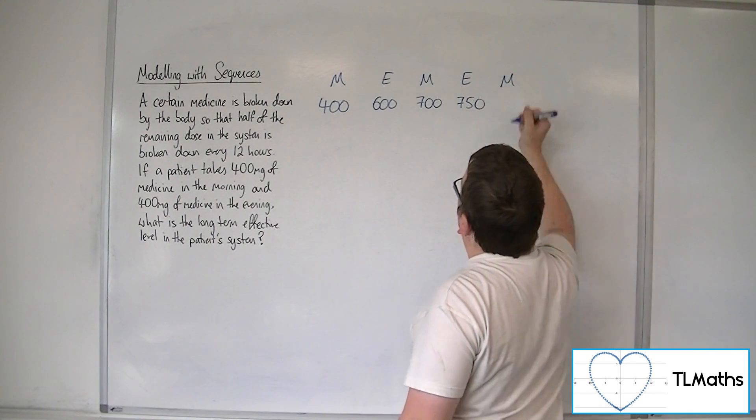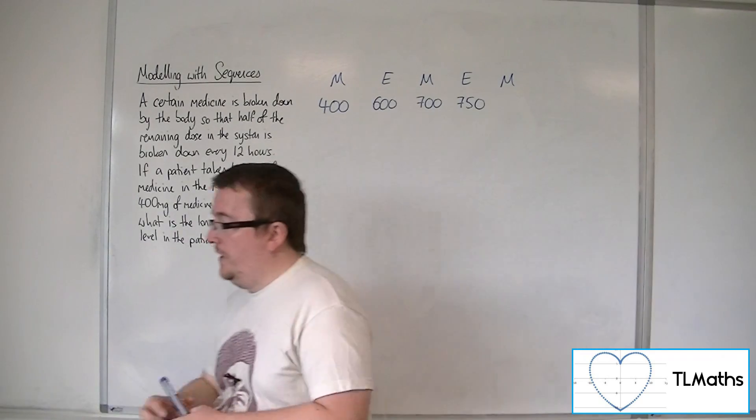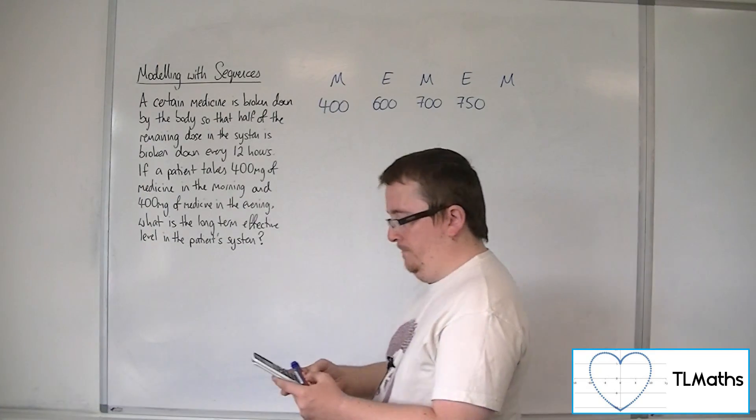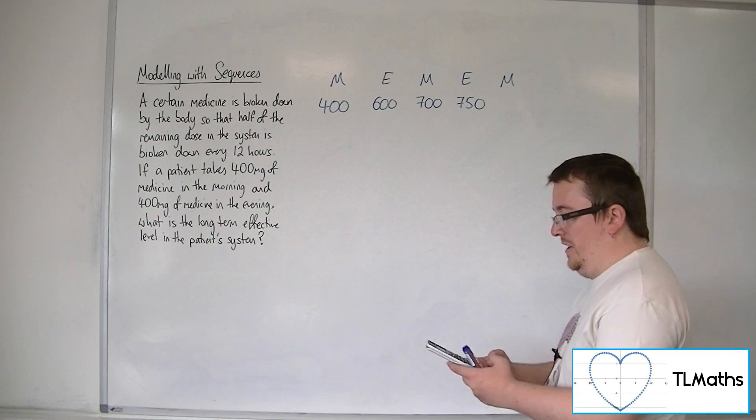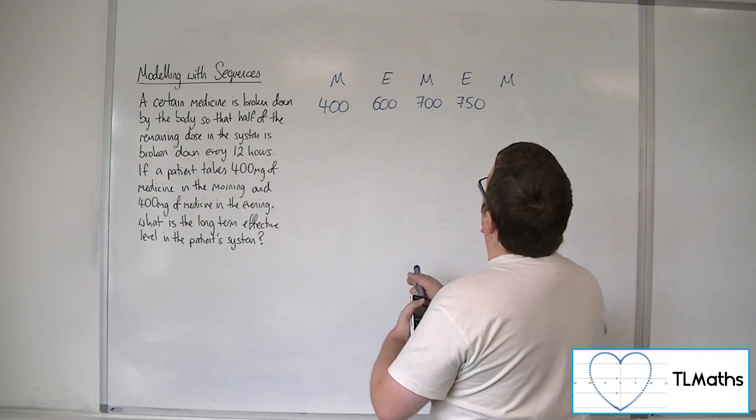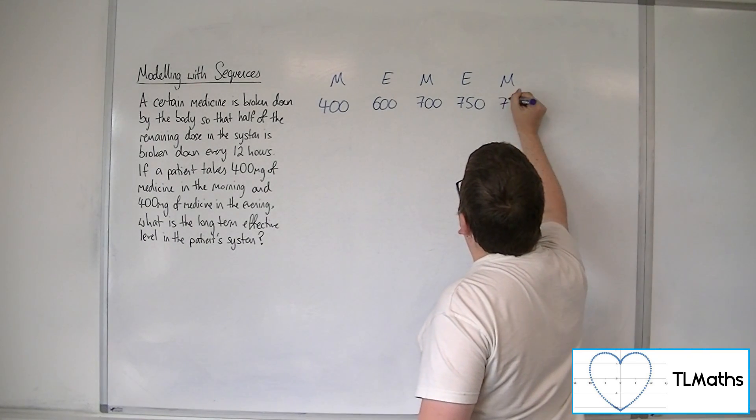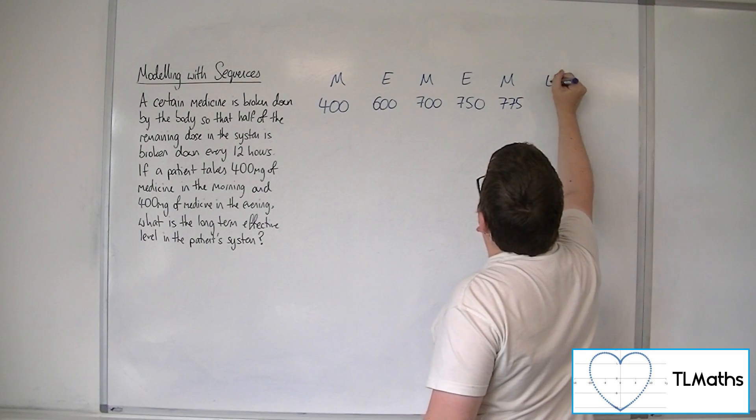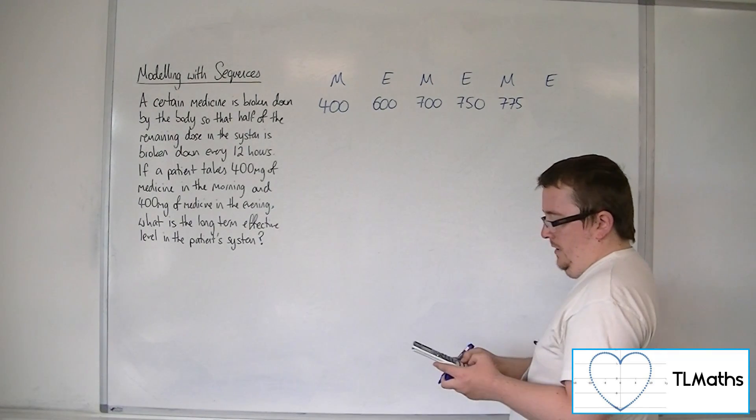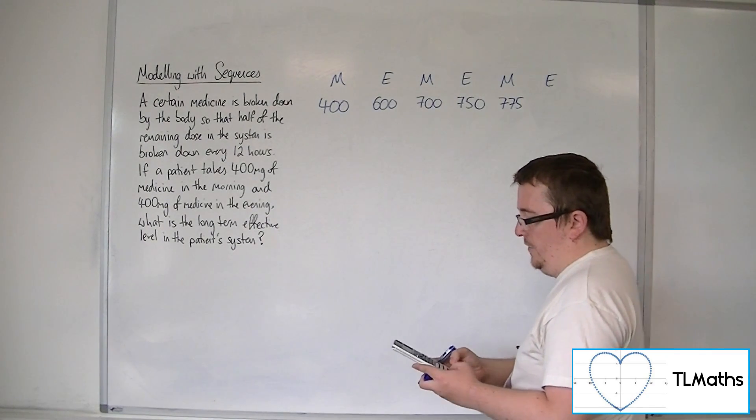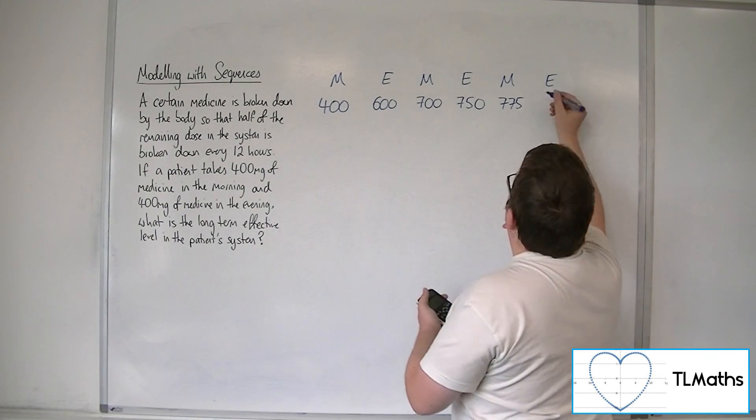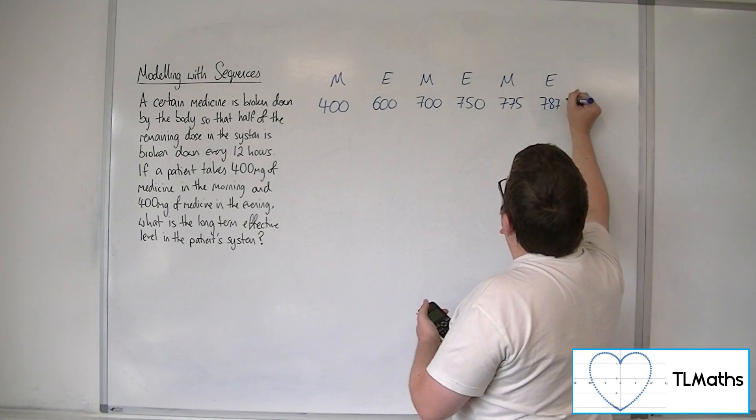Then, in the morning, 750mg has been halved, okay? And then we add on another dosage, so we get to 775mg. Then, by the evening, half of that is gone, and we add on another dosage. So, 787.5mg.